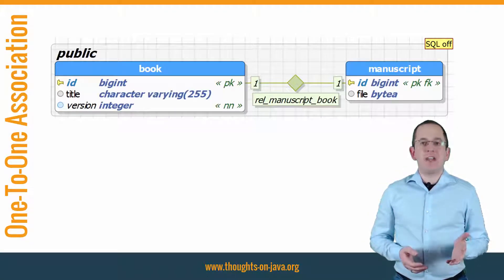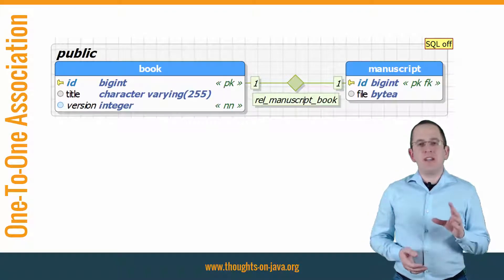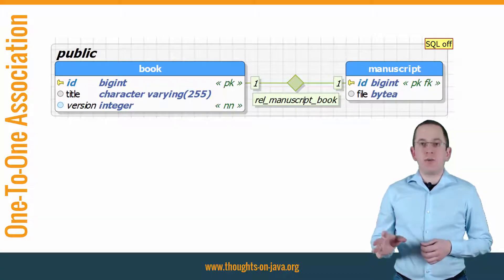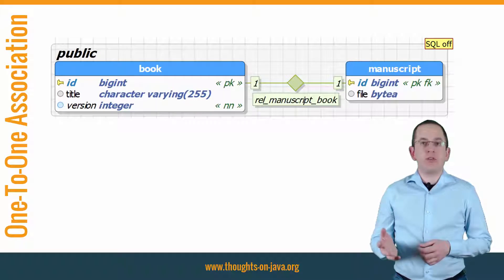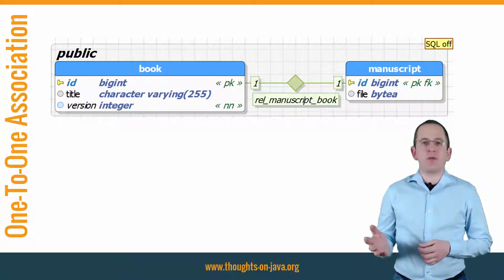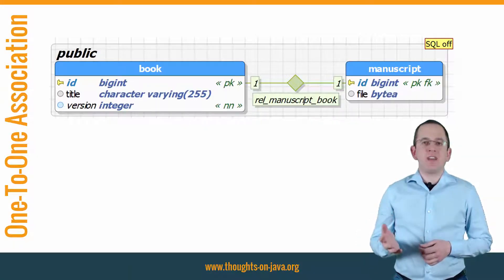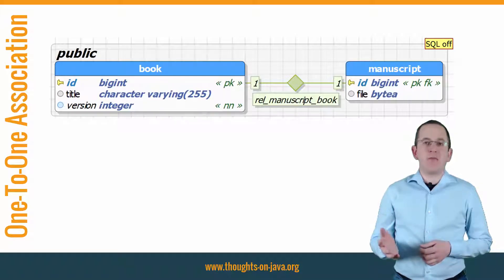Let's take a look at this simple example. Each book has a manuscript and each manuscript belongs to one book. The foreign key of the book is also the foreign key of the manuscript. Let's get into the IDE and take a closer look at the mapping.